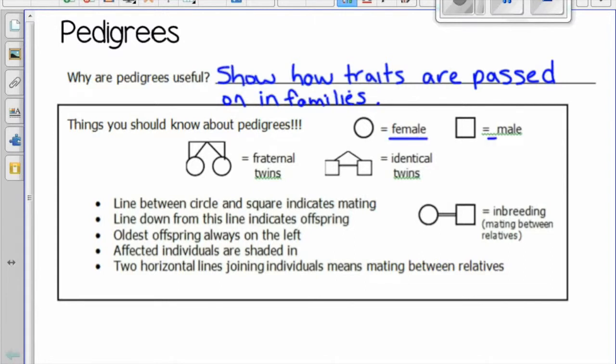A couple of symbols that are useful to know is that a female is represented by a circle and a male is represented by a square. A line between a circle and a square indicates mating. Line down from this line indicates offspring. So this couple had two girls and a boy.